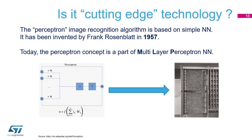Is it the cutting-edge technology? Of course not. The first neuron model was invented in 1943 in the US. The first hardware implementation of the neural network was implemented in 1957 in the US as well. It was an application for image recognition using light sensors, and the resolution of the camera was 20 by 20 pixels.